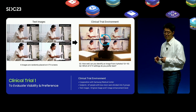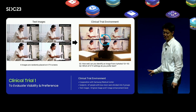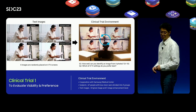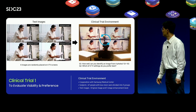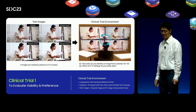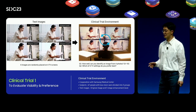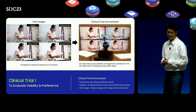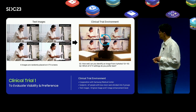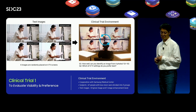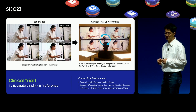Subjects watched the video and evaluated their visual ability and preference by answering two questions. First, the score for each setting — the question was: how well can you identify an image from four photos? Scored from 0 to 10, with higher scores indicating better identification. The second question was the preferred setting: which of the four TV settings do you prefer best? This trial found out how much better users understand images when watching TV.